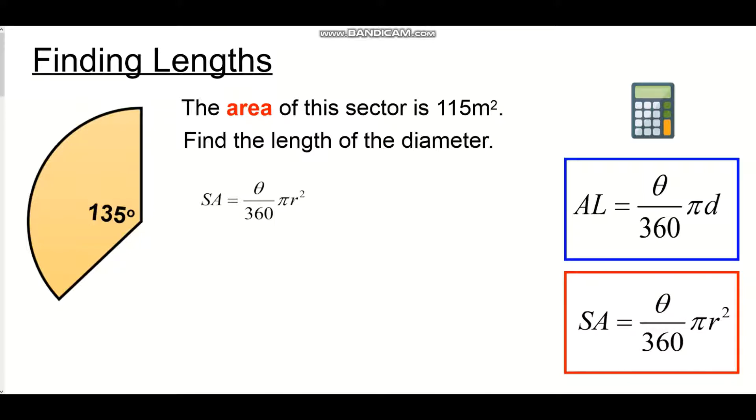Okay so the sector area I know is 115 so instead of writing SA for sector area I'm going to write in 115. The internal angle I know is 135 so I'm going to change theta for 135. 360 stays on the bottom of the fraction. Pi is still a multiplier of that fraction and we're multiplying that by radius squared. Okay so what I need to do is I need to work this equation so that r squared is the subject.